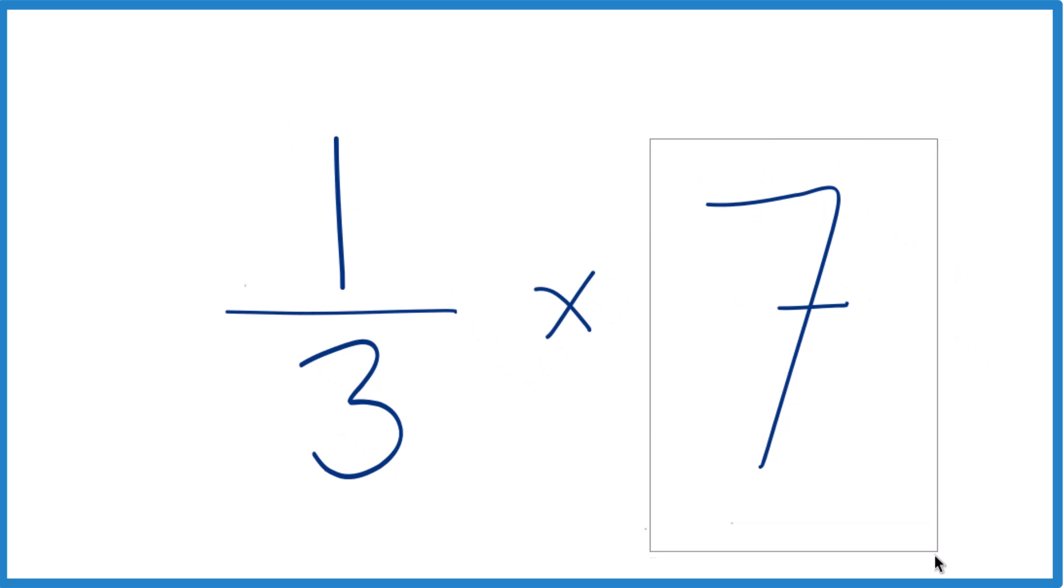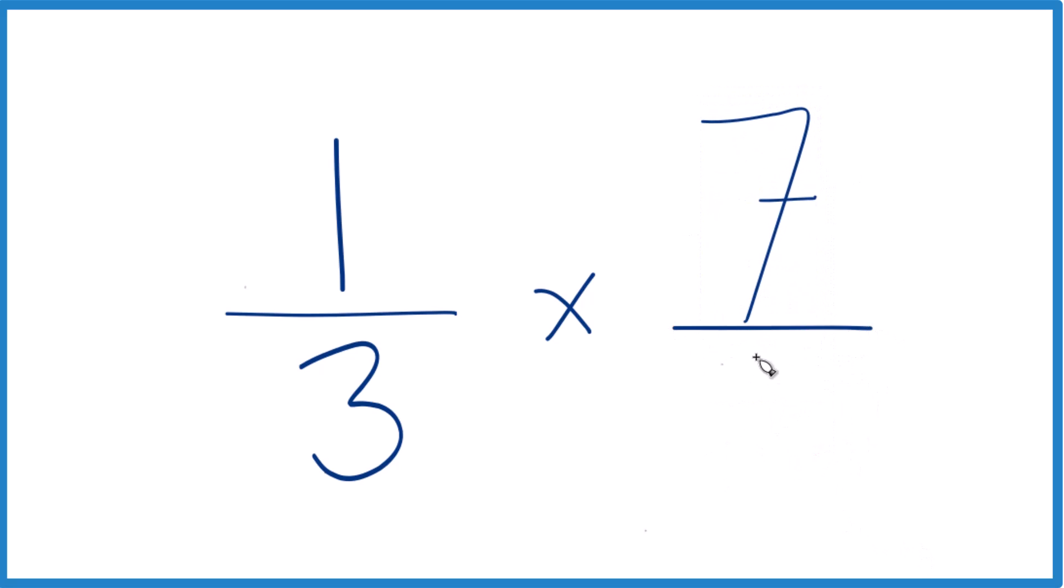And for the seven here, let's make it a little smaller, move it up, and call it seven over one, because seven divided by one is still seven. We haven't changed the value, just the way it's written.